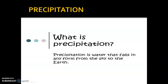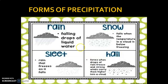Precipitation is an important part of the water cycle. When clouds become heavy and are not able to hold more water, the water falls from the clouds to the earth's surface. Precipitation is the water that falls in any form from the sky to the earth. The different forms of precipitation are rain, sleet, snow, and hail.